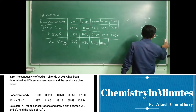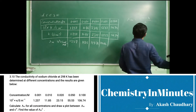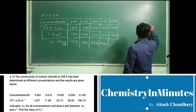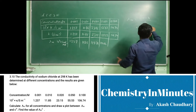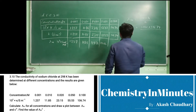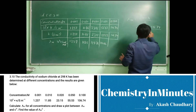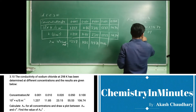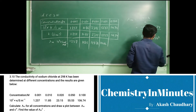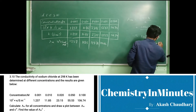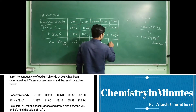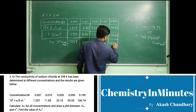For the fifth set of values, lambda m equals 1000 times k, where k is 106.74, divided by c which is 0.1. This gives 106.74 times 10 to the power 4 siemens centimeter squared per mole. So we write 106.74 in this column. These are all the lambda m values.